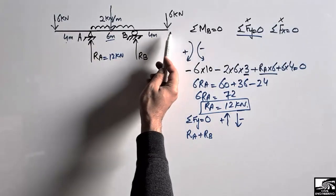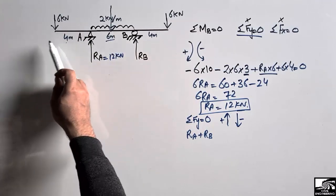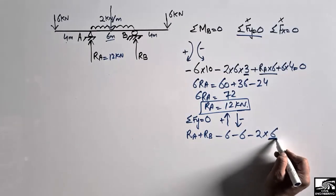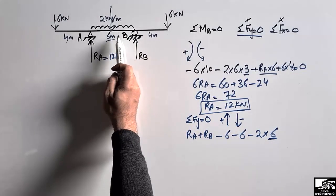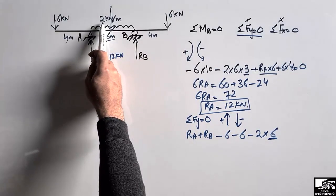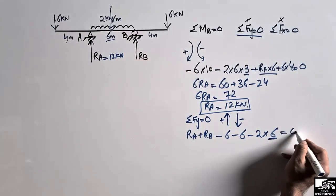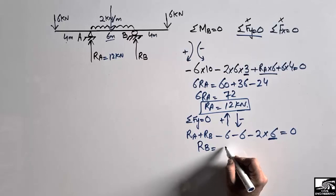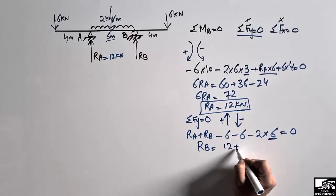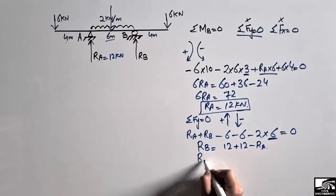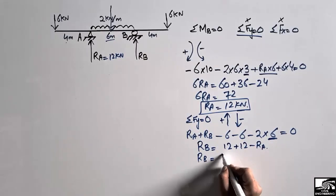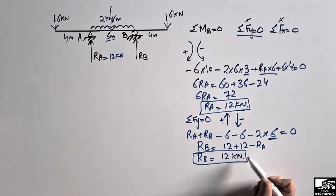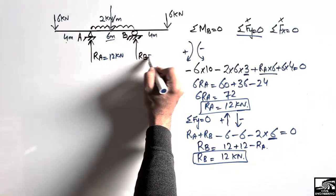The downward forces are: minus 6, minus 6, and minus 2 times 6 equals minus 12 kilonewtons. So RA plus RB minus 6 minus 6 minus 12 equals zero. Substituting RA equals 12: RB equals 24 minus 12 equals 12 kilonewtons. Both reactions are equal due to the symmetric loading of the beam.